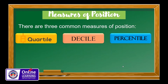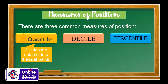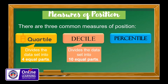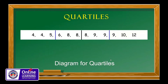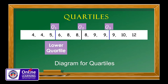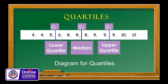When we say quartile, it divides the data set into four equal parts. When we say decile, it divides the data set into 10 equal parts, while percentile divides the data set into 100 equal parts. For quartiles, we have Q1 for the first quartile, Q2 which is the median, and Q3 which is the upper quartile. Each quartile has 25 percent of the data.